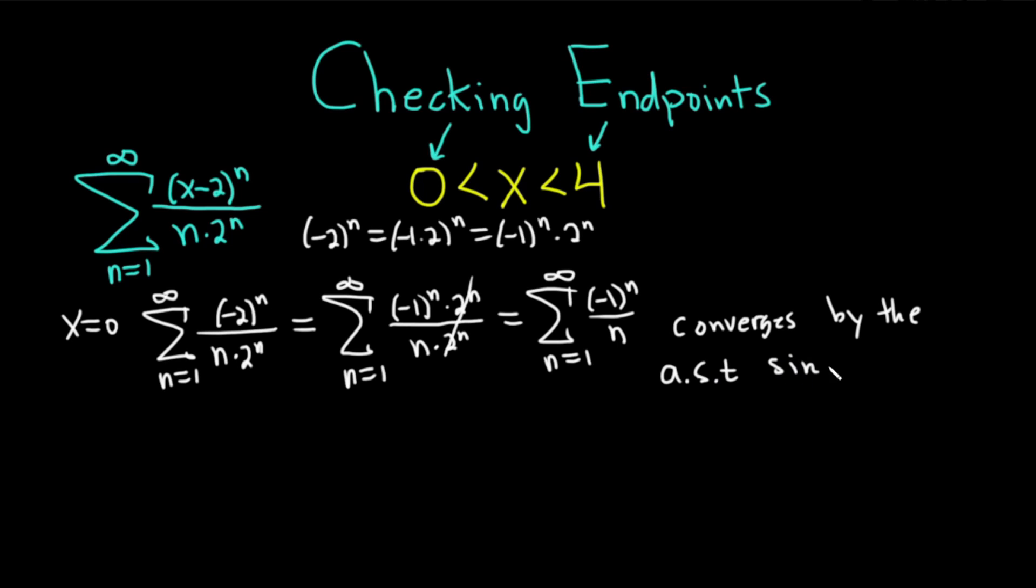If you had to justify it, you would set a sub n equal to the non-alternating part, so 1 over n. Then verify the two conditions of the alternating series test. The first being that the limit as n approaches infinity of a sub n is 0, which is pretty obvious. And the second being that it's non-increasing, which is also clear. You could take the derivative and show it's negative.